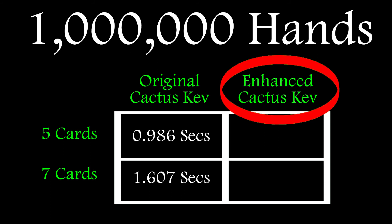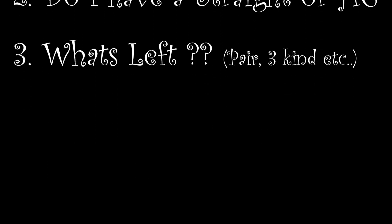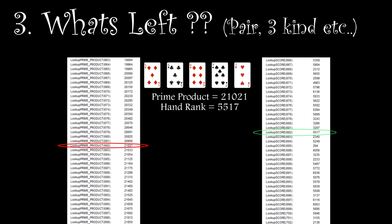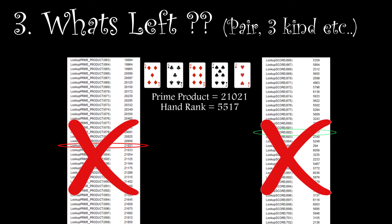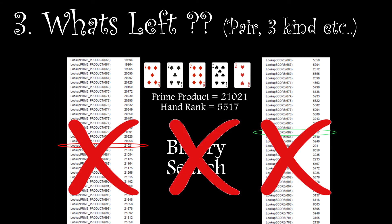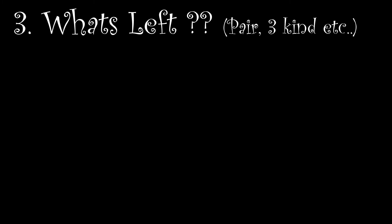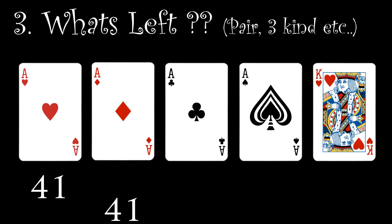But what's the enhanced Cactus Kev column for? Well, there's a way to make it faster, which is also easier to code and use. It involves going back to question three and throwing out the prime product and score arrays, and this also does away with the need for a binary search.